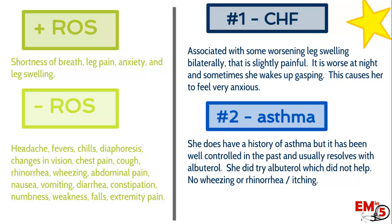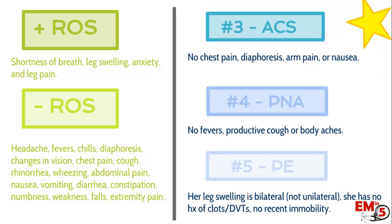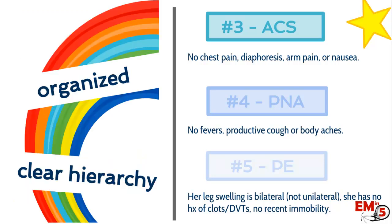The better way is to sort symptoms by differential diagnosis. For example, thinking CHF, you say: 'The shortness of breath is associated with worsening bilateral leg swelling that's painful; worse at night, sometimes waking her gasping, causing anxiety.' Thinking asthma: 'She has a history of asthma, but it's been well controlled, usually resolves with albuterol — she tried it and it didn't help, and she has no wheezing, rhinorrhea, or cough.' For ACS: 'No chest pain, diaphoresis, arm pain, or nausea.' For pneumonia: 'No fevers, productive cough, or body aches.' For PE: 'Leg swelling is bilateral, no history of clots, DVTs, or recent immobility.' As the attending listening, this is organized — I know exactly what you think and where you're going.